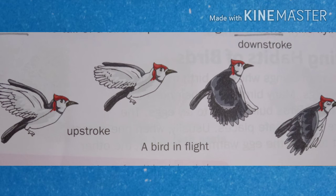The first movement is the upstroke and the second is the downstroke. Upstroke means the upward and backward movement of the wings — the wings move upward and backward. This is called the upstroke movement.